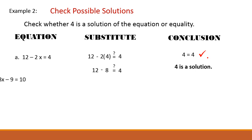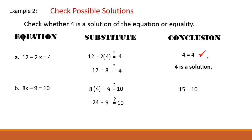Another equation example: 8x − 9 = 10. Substitute x = 4: 8(4) − 9 = 32 − 9 = 23. Wait — 8 times 4 is 32, minus 9 equals 23, not 10. So 23 ≠ 10. Therefore, 4 is not a solution.